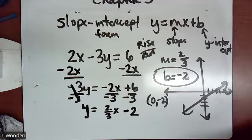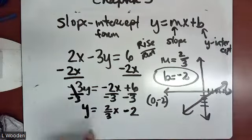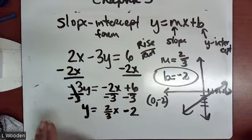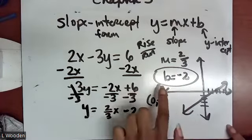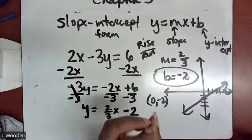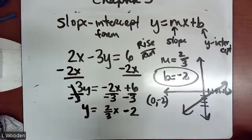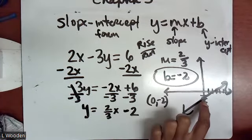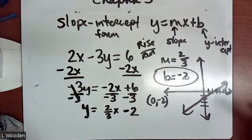A student asks about starting at negative 2 and going up two and over three. Yes — the slope is not a point. The slope tells you direction, but doesn't tell you where you're beginning. The B tells you where you're beginning. We start at negative 2 because that's the only point we know — B is the Y intercept. The slope tells you how to go from one point to another, and then we use rise and run from there.